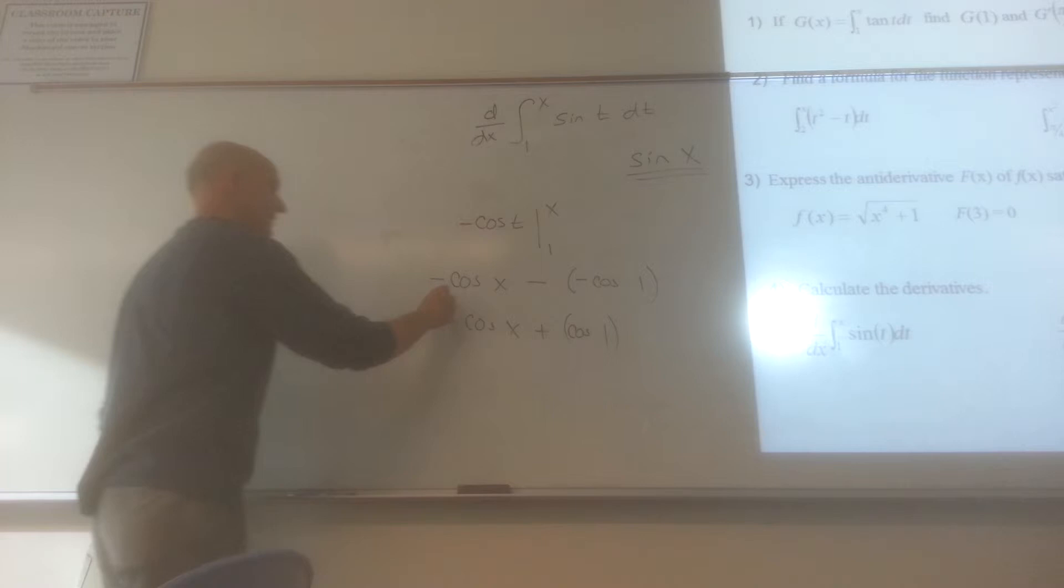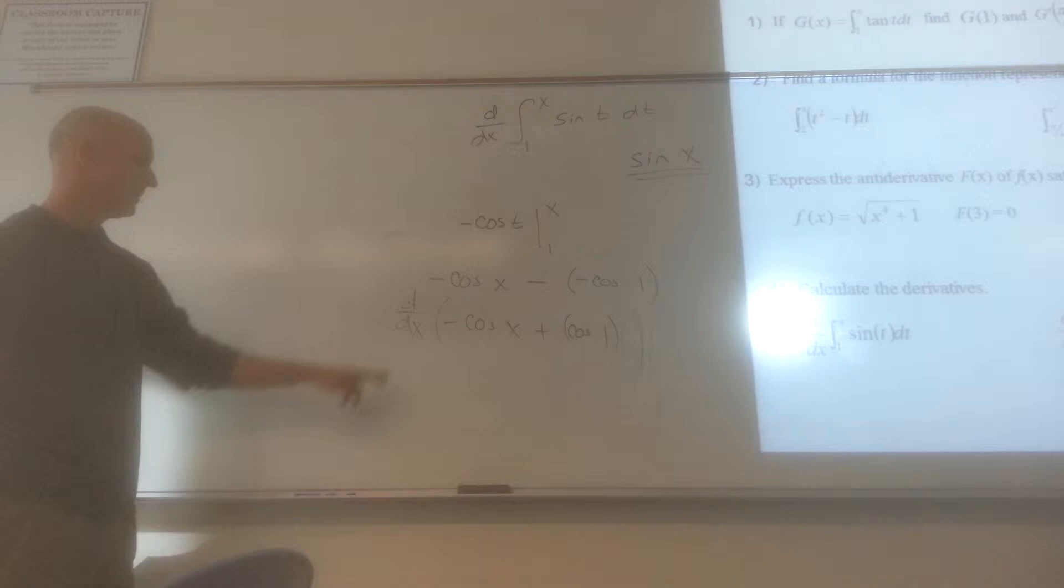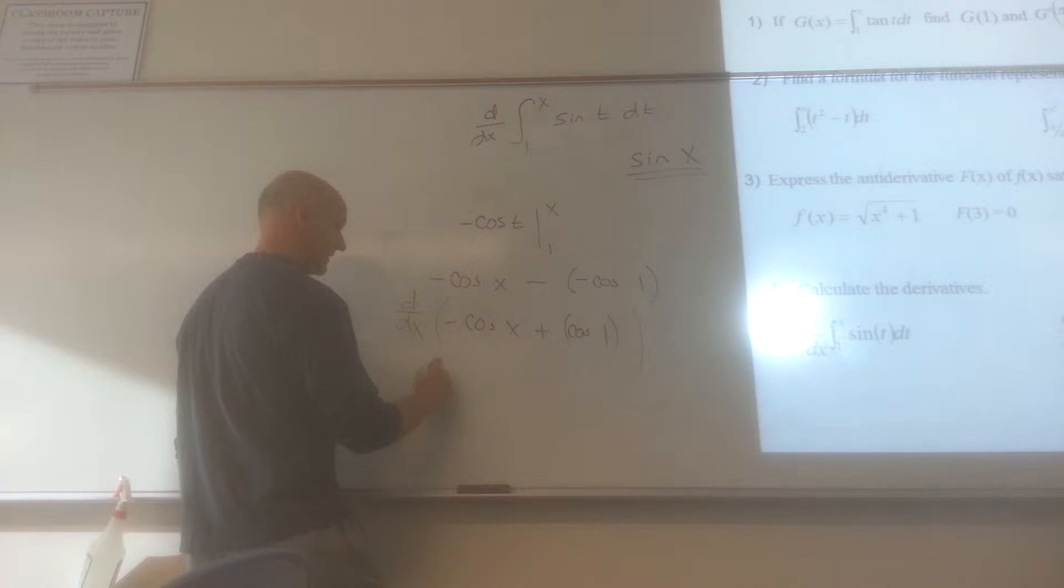So now if I was to take the derivative of this, the derivative of the negative cosine is going to be what? The negative, the derivative of the cosine is what? Negative sine of x. And so minus a minus is going to create our sine of x, isn't it?